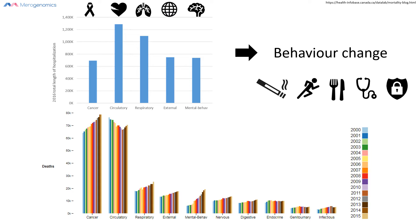That might be a surprising one to most. We know about life insurance — in the event of death, to make sure there is financial compensation to help our loved ones. But the types of insurance that neurogenomics is particularly fond of are critical illness insurance and supplementary insurance.